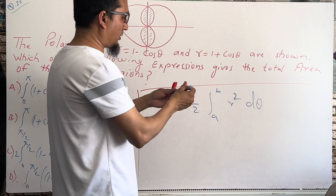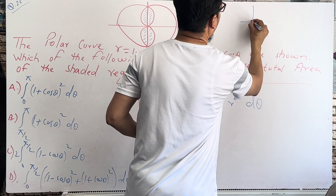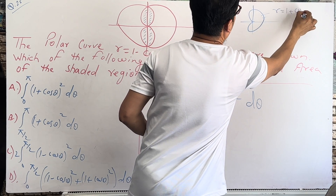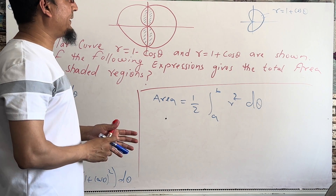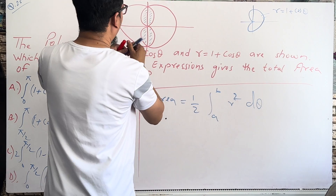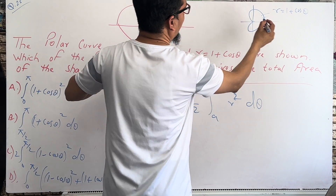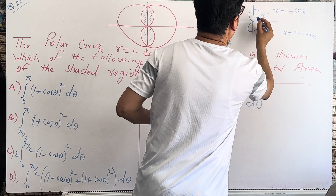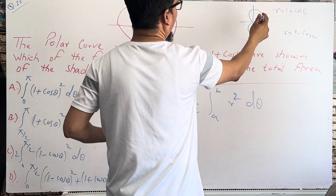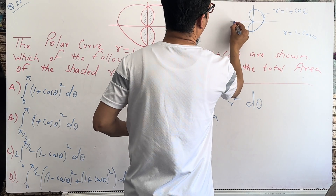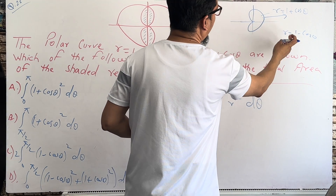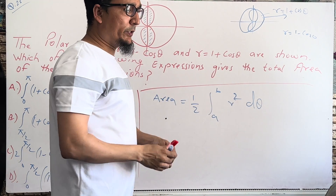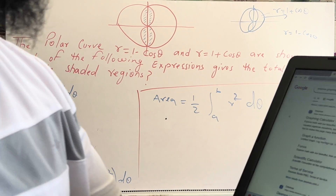This is our graph. This is the graph of r = 1 + cosθ. You can see the angle range — from where to where. For r = 1 − cosθ, the curve goes in the opposite direction. This is the graph of r = 1 − cosθ on this side. When you have 1 − cosθ, it goes in the opposite direction compared to 1 + cosθ.